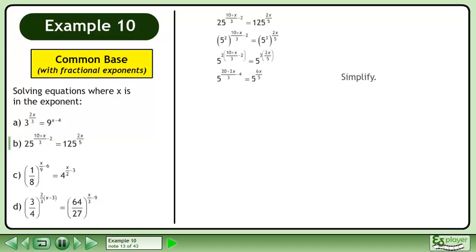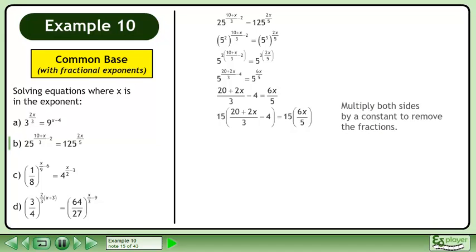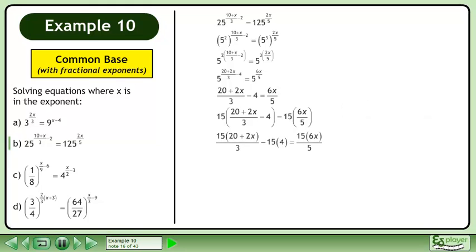Simplify. Now that the bases are equal we can equate the exponents. Multiply both sides by a constant to remove the fractions. Multiply 15 through the brackets. Simplify.